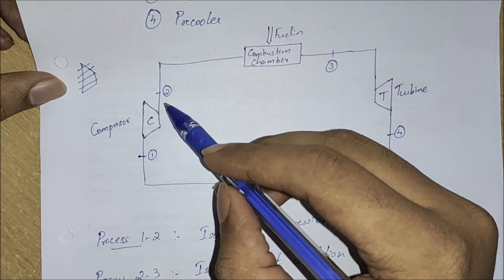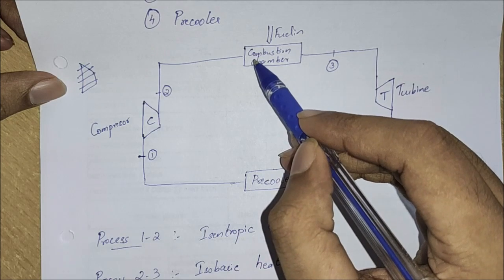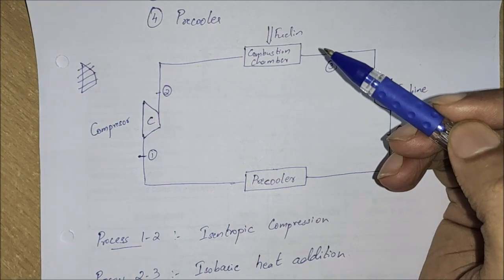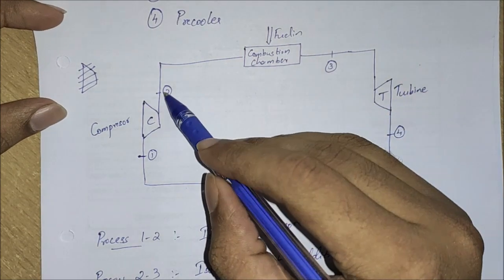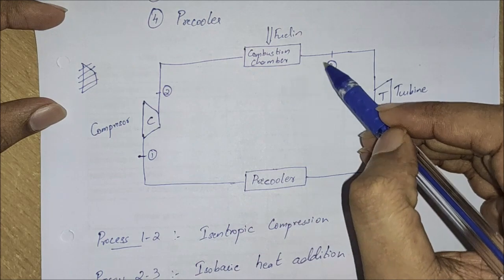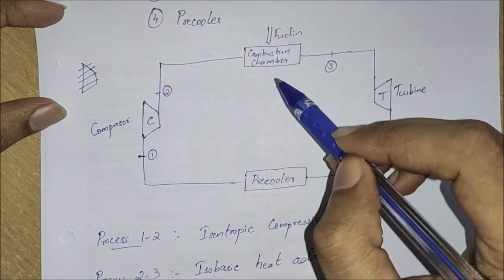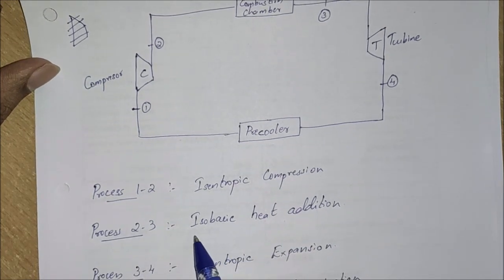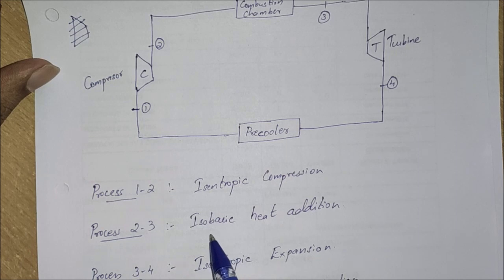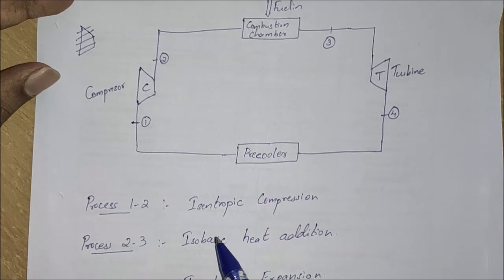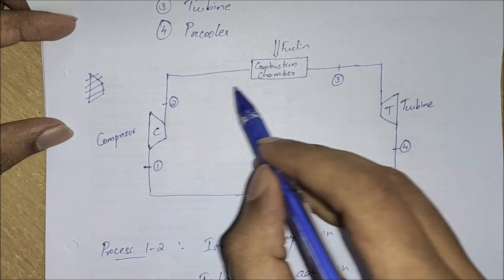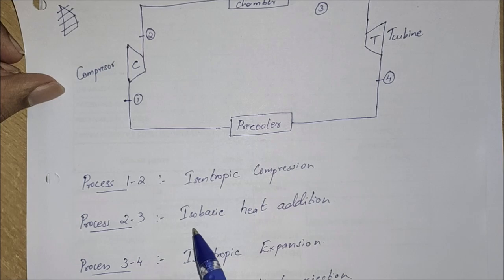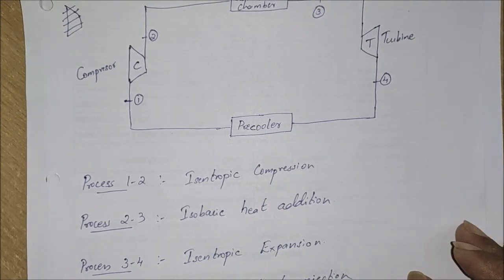After compression, the gas moves on to the combustion chamber where fuel is added for the combustion process. So it is basically a heat addition process. Process two to three, where fuel is added and combustion occurs, is an isobaric heat addition process — heat addition taking place at constant pressure.